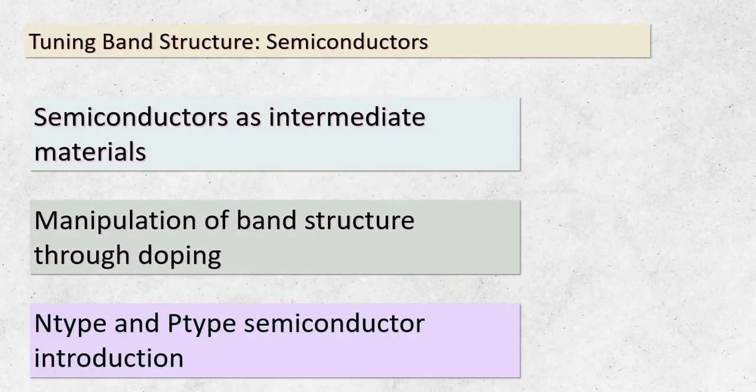Let's take a detour into the world of semiconductors within band structures. What sets semiconductors apart is their intriguing ability to be somewhere in between conductors and insulators. It's all about manipulating the band structure. Imagine you're an orchestra conductor adjusting the arrangement to change the mood of the music. Similarly, we can alter the properties of a semiconductor by introducing impurities or dopants — this process is called doping, and it allows us to tweak the band structure to our advantage. When we introduce certain dopants, we create n-type semiconductors, which have extra electrons and are good conductors. On the other hand, p-type semiconductors have fewer electrons, creating holes that behave like positive charge carriers. The interaction between these n-type and p-type materials is at the heart of many electronic devices, like diodes and transistors.